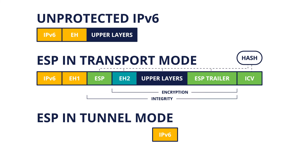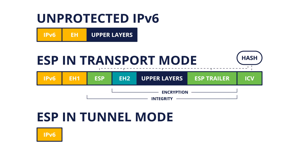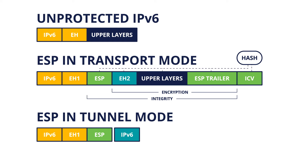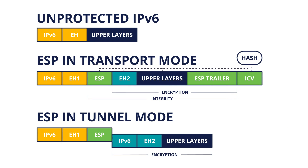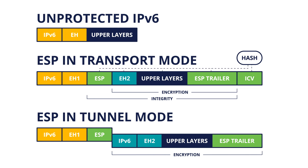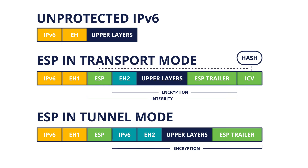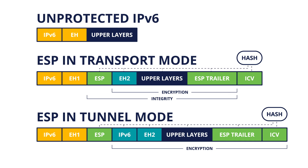If ESP is used in tunnel mode, then the original IPv6 packet is protected in its entirety by ESP. When ESP is providing confidentiality, the bytes of the packet that go after the ESP header are encrypted, and an ESP trailer is added. If ESP is providing integrity, then an Integrity Check Value is computed using a hash function, just as it does in transport mode.